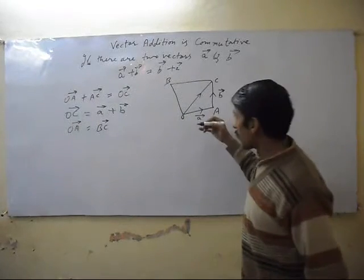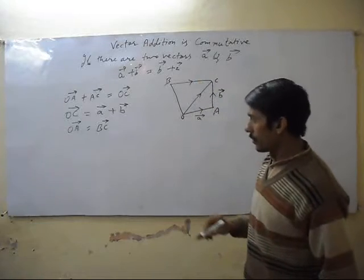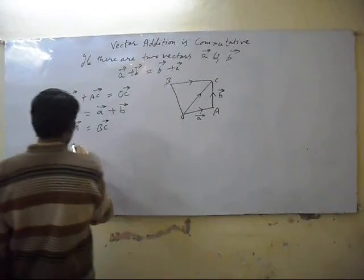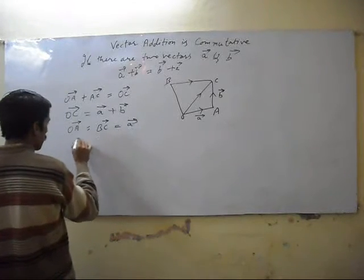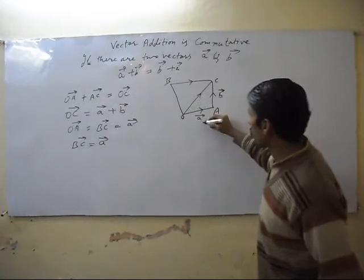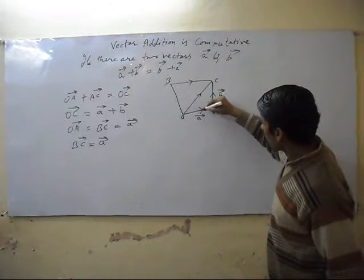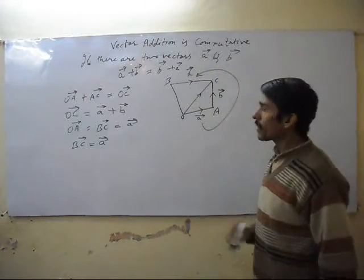It means we can show A vector here at BC. We can write the same thing here: A vector.